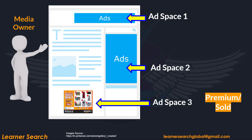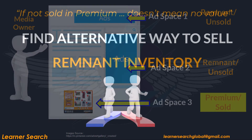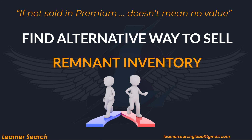Similarly, for publisher ad inventory, let's say out of three ad spaces, only one ad space is sold and the remaining two ad spaces are unsold. If publishers don't find an alternative way to sell remnant inventory, then publishers earn nothing and it is a loss for them — they miss the chance of making revenue out of it. Similar to our example of land space, now it's time to find a way or revenue source and need some player who can help to sell those remnant inventories.